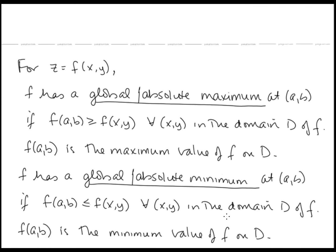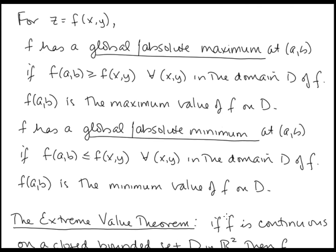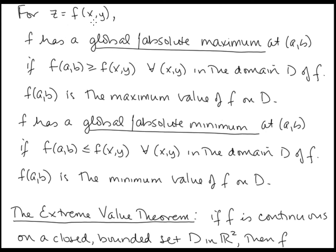Now let's look at what we have for functions of two variables. For z as a function of x and y, f has a global or absolute maximum at (a, b) if f(a, b) is greater than or equal to f(x, y) for all (x, y) in the domain D of f, and we call f(a, b) the maximum value of f on D. Similarly, f has a global or absolute minimum at (a, b) if f(a, b) is less than or equal to f(x, y) for all (x, y) in D, and f(a, b) is the minimum value of f on D.